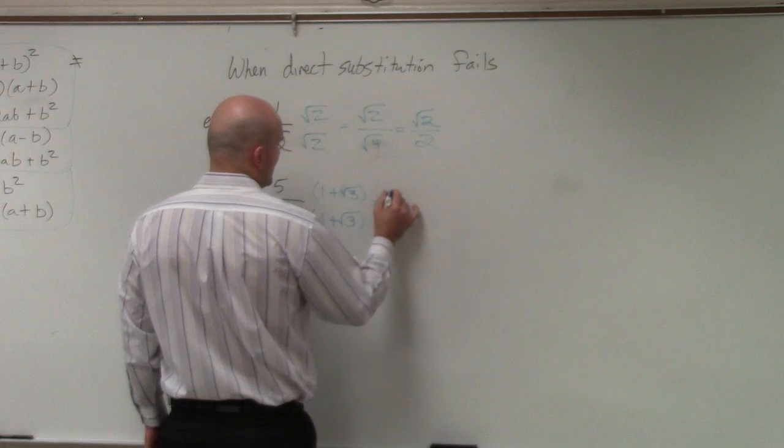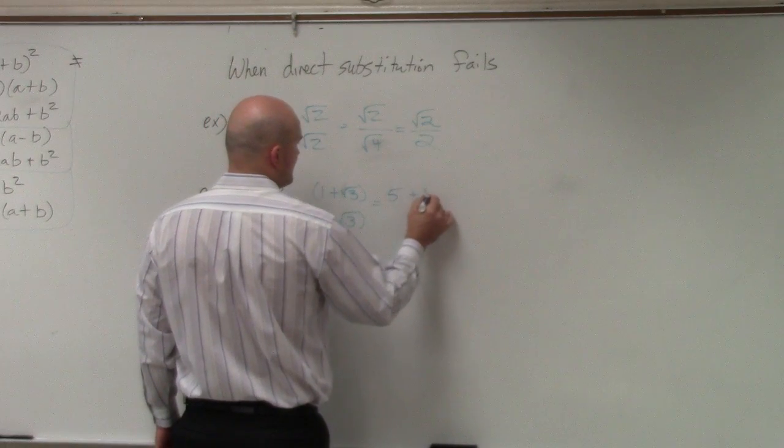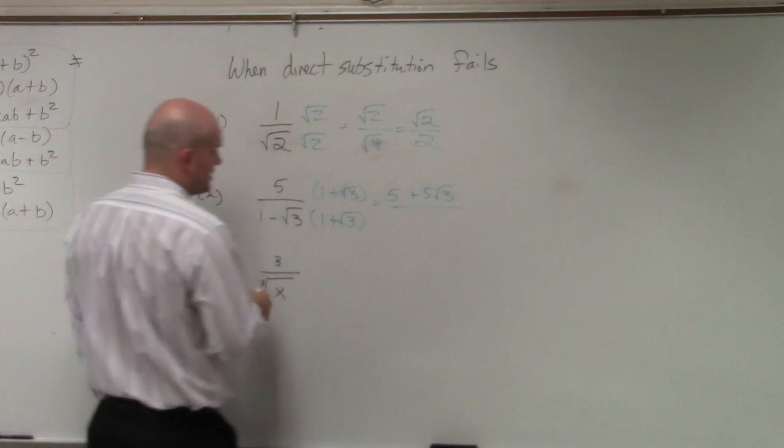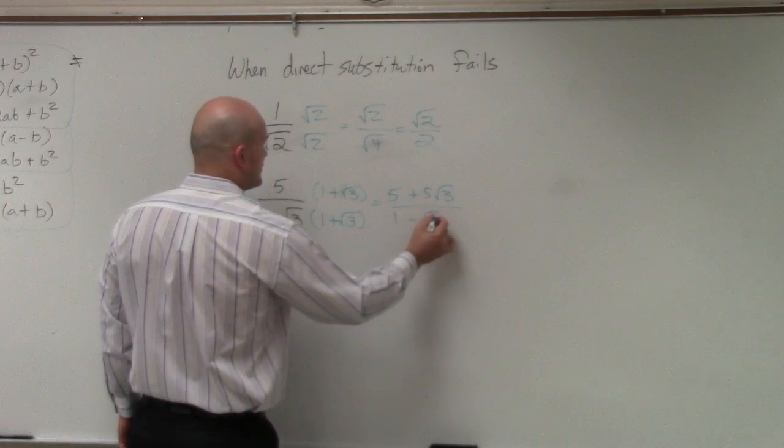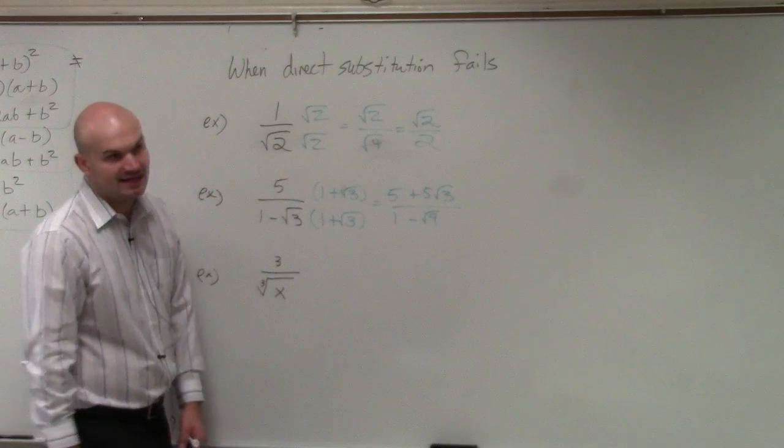So in the numerator, I will apply a distributed property. And in the denominator, what you'll see is I have 1 minus the square root of 9. Obviously, the square root of 9 is 3.